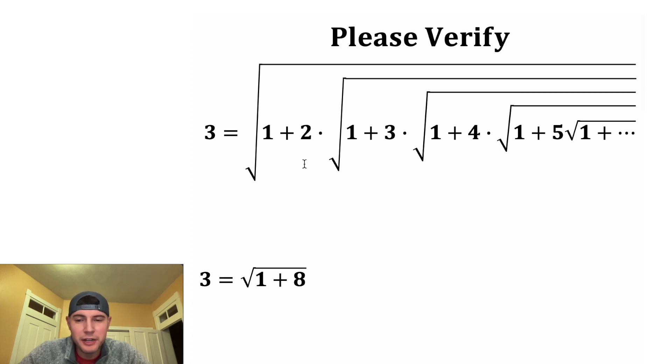And next I want a 2 right here. So let's change this into a 2 times 4. So now we have 1 plus 2 times something. And then that something needs to be another square root. So let's change this 4 into a square root of 16. And then we need another 1 plus. So let's change this into a 1 plus 15.